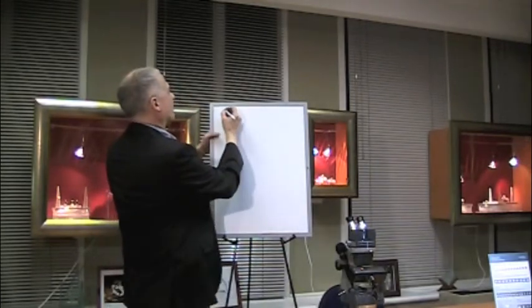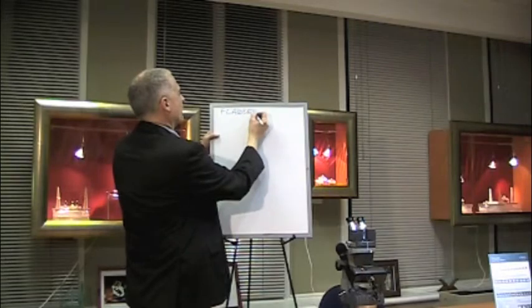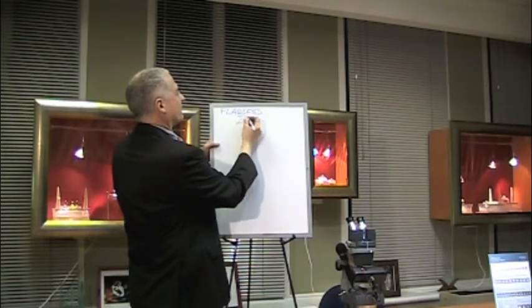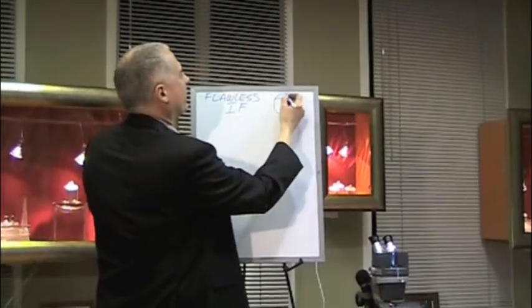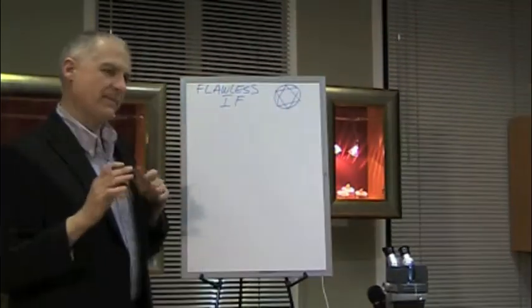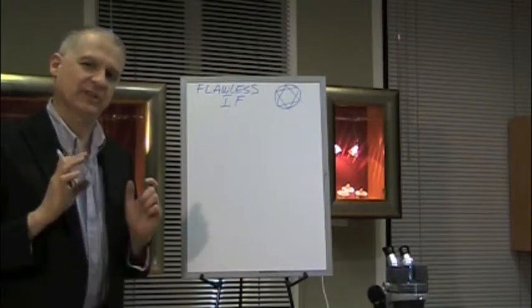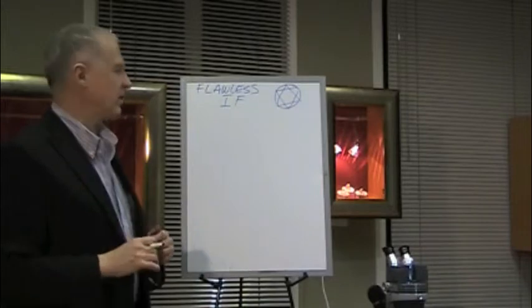Now the very top grade is called flawless or internally flawless IF. If I draw my little diamond diagram here, even under high power magnification there's absolutely nothing in the stone. There's not even a pinpoint inclusion.